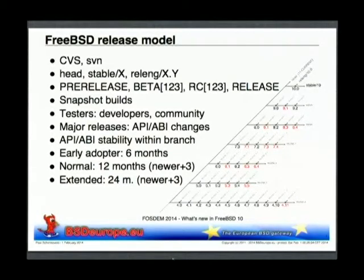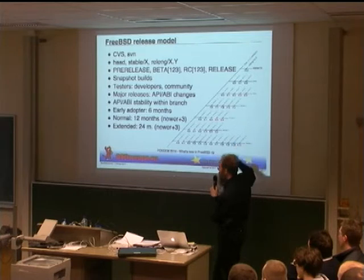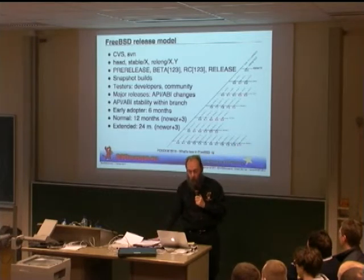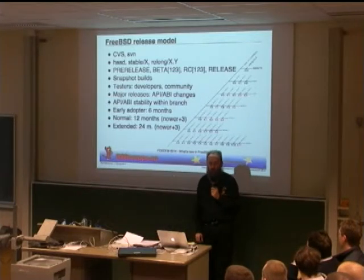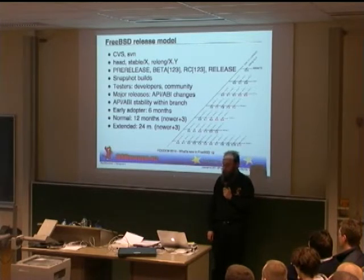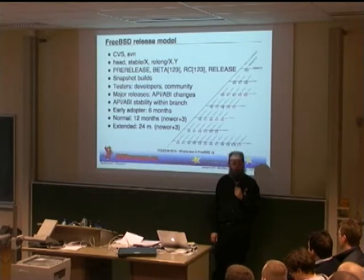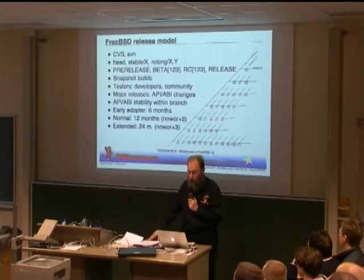One thing very important in the FreeBSD release model is that within a major release — one of the horizontal lines — the kernel application programming interface, but also the kernel application binary interface, remains unchanged. That means that if you've written a piece of software for version x.y, even if it's a device driver, it should work out of the box with all version numbers that start with x — from x.0 up to the last one, x.whatever.